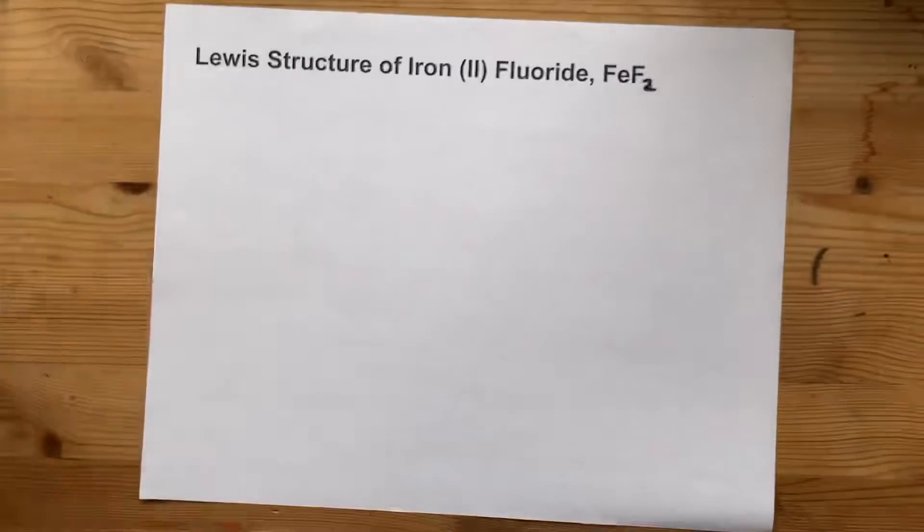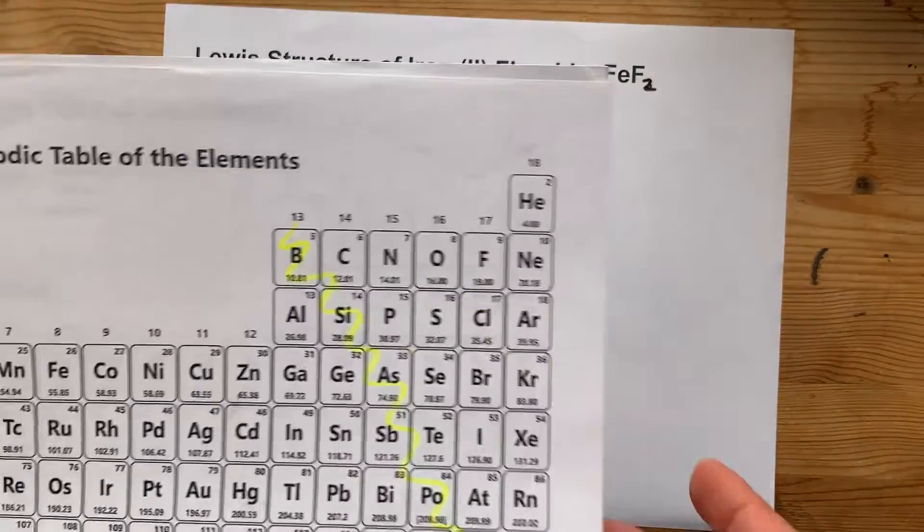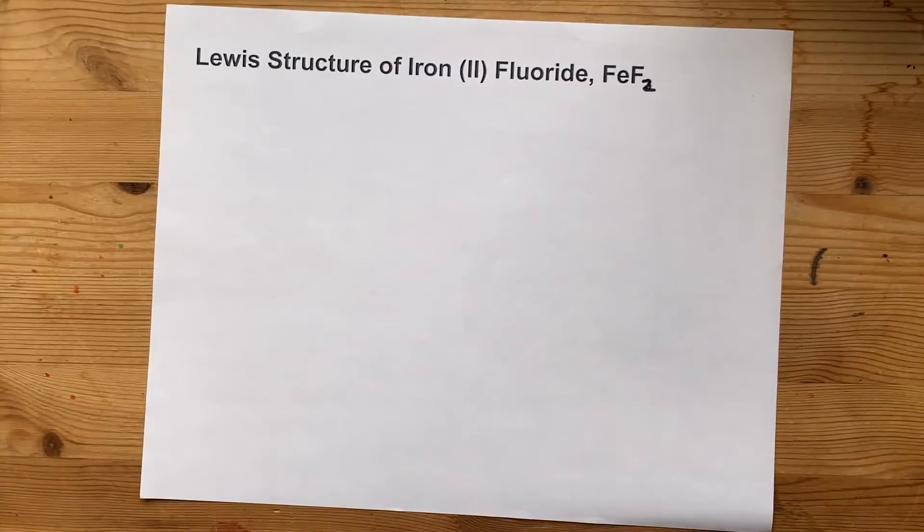Now, iron, being a metal, can have a charge of either positive 2 or positive 3. Here it is, positive 2. Fluorine wants a charge of minus 1.